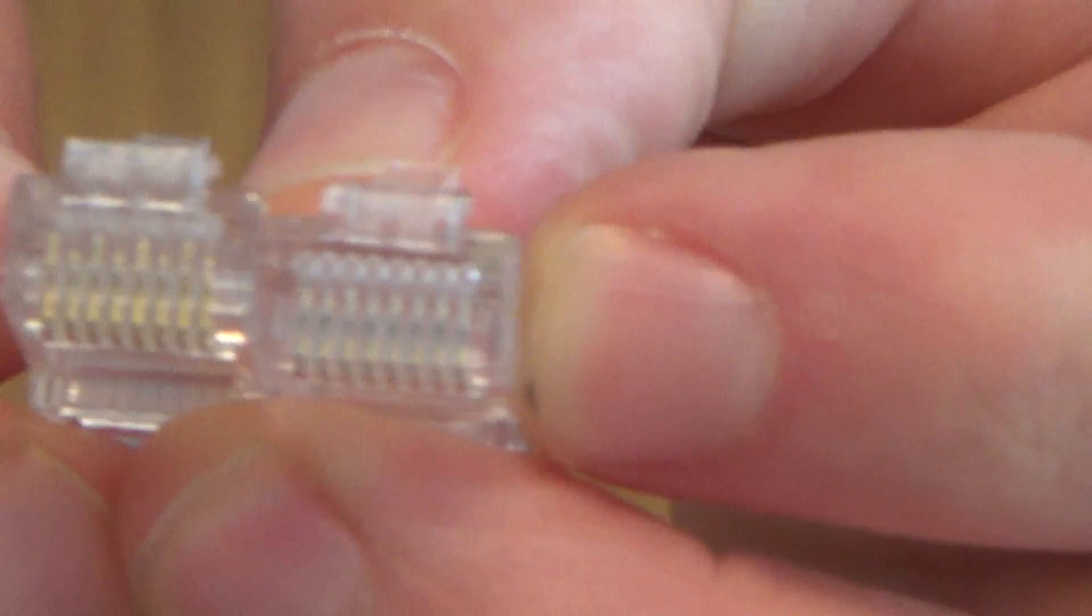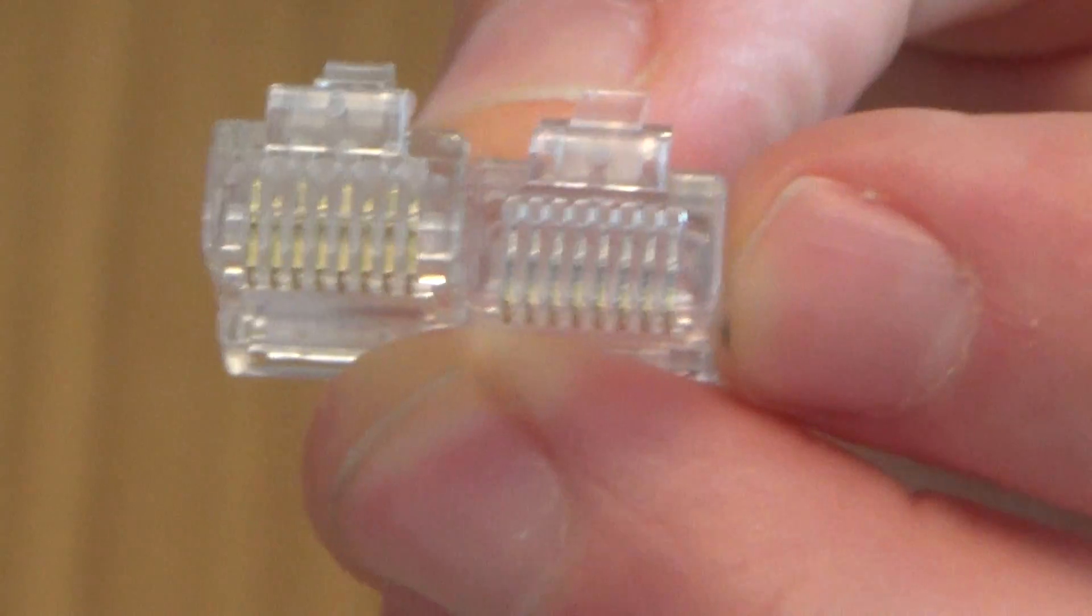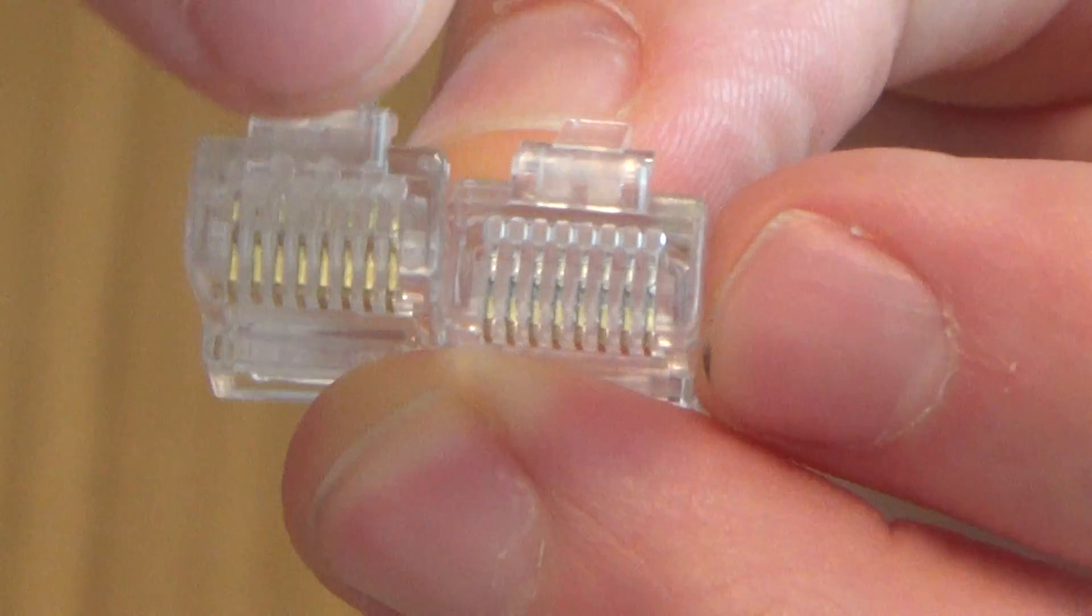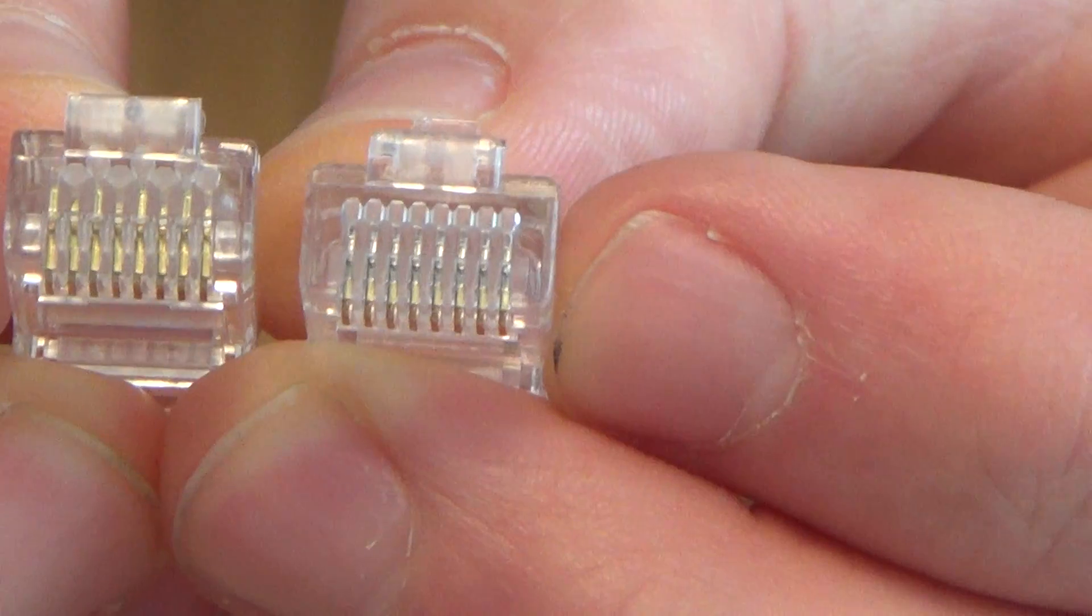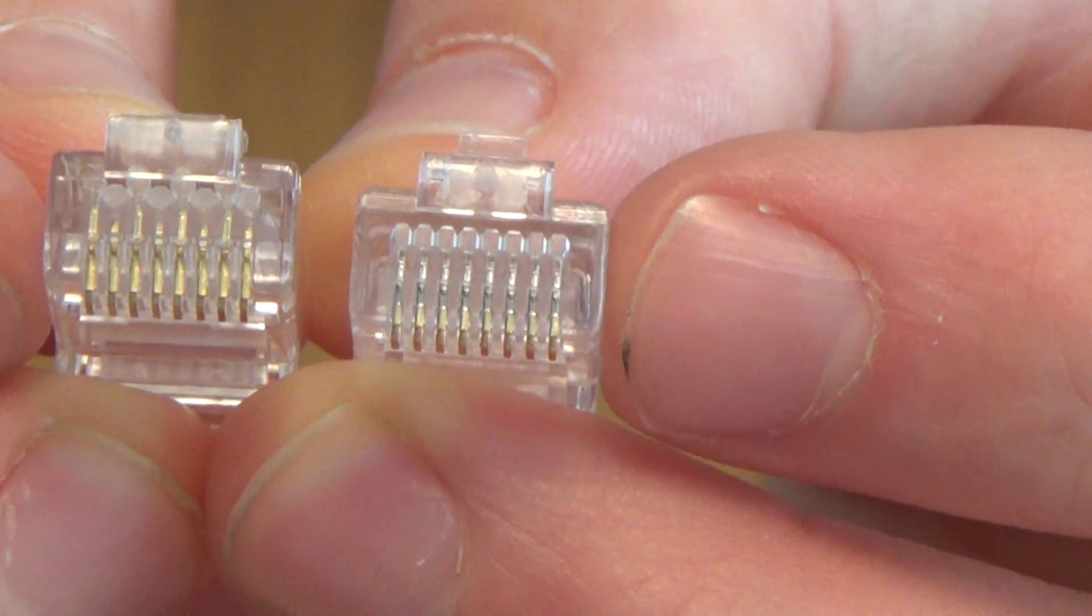Now I don't know if you can see that, but the Cat6 one has got staggered holes, so the holes are like staggered and the Cat5e is just straight across. So that's the only difference between them, but today we will be working on the Cat5e one.